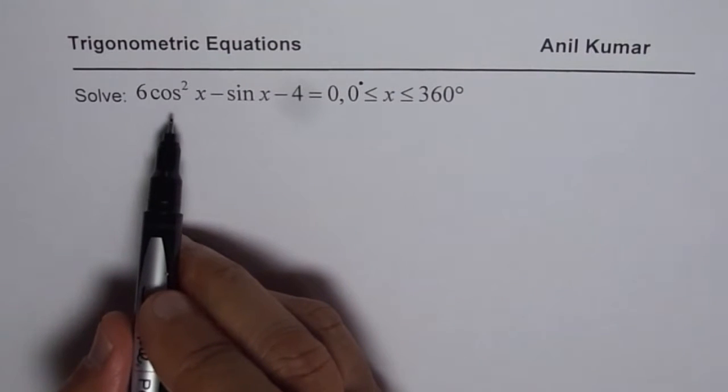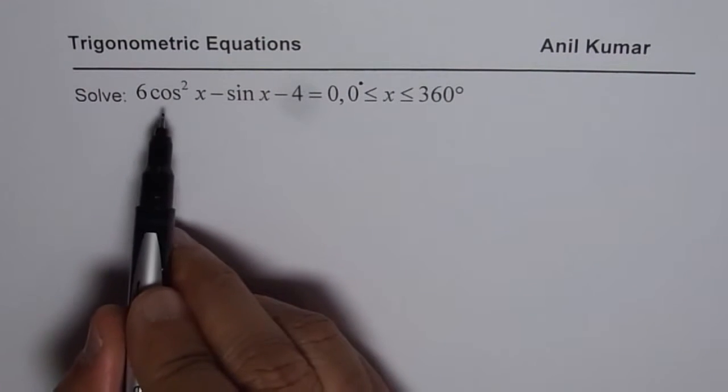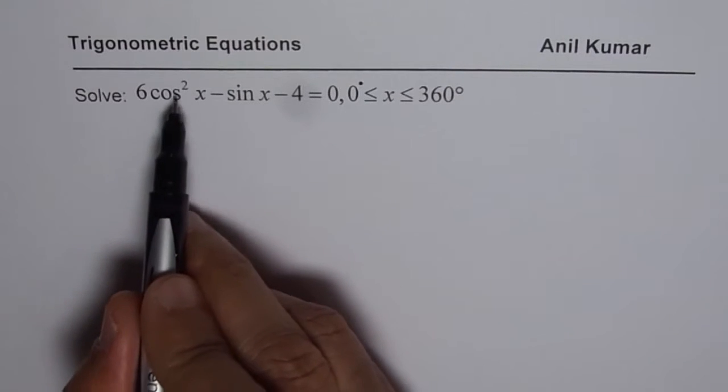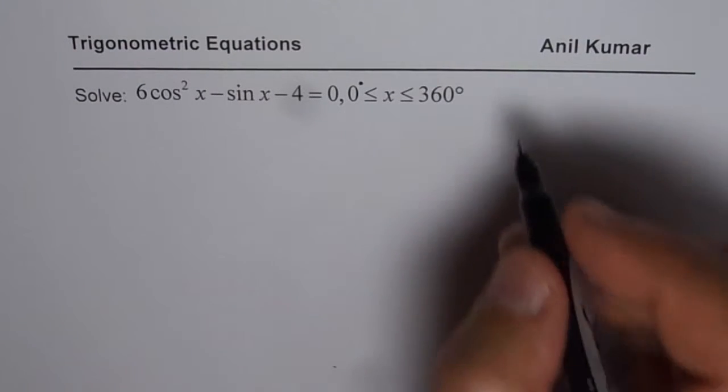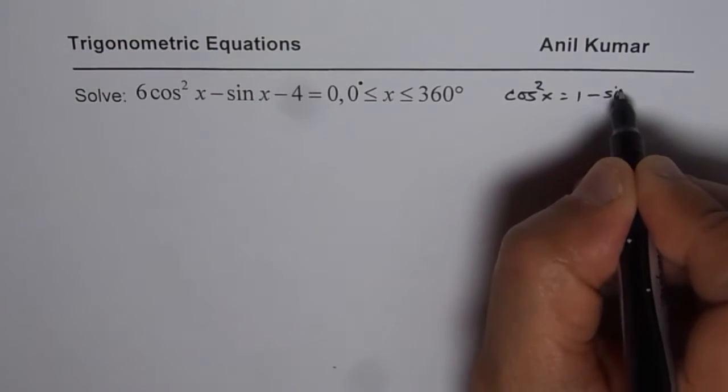The equation has sin as well as cosine. We should write it in one trigonometric ratio. Cos square x could be written as 1 minus sin square x. So we will replace cos square x with 1 minus sin square x.